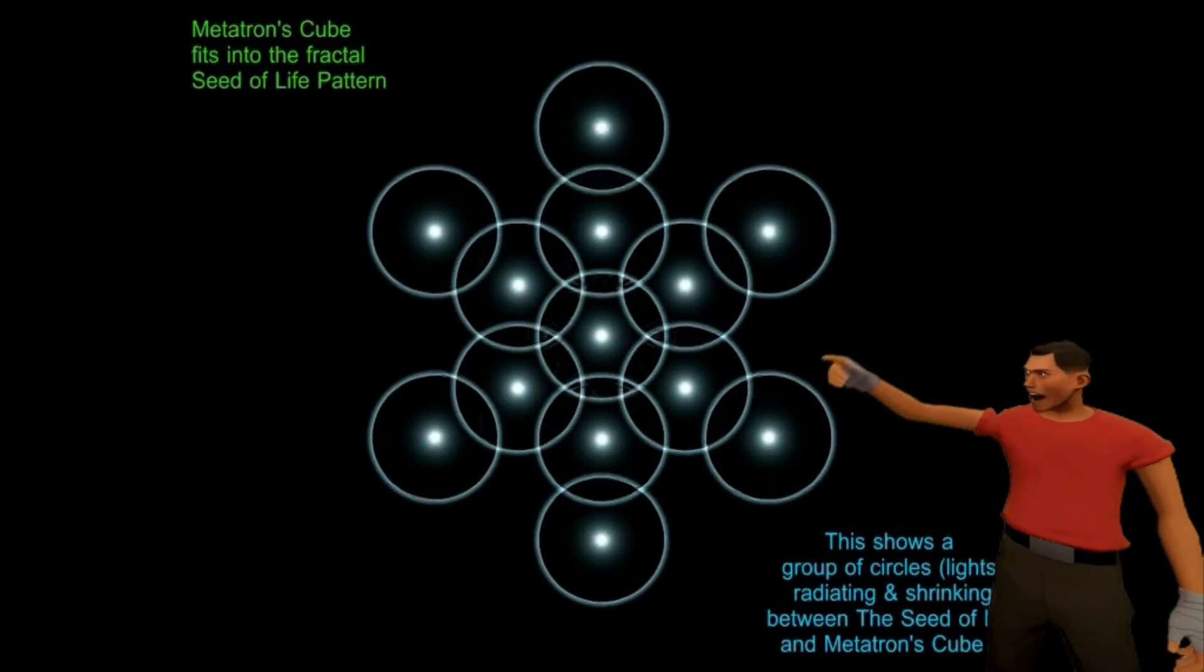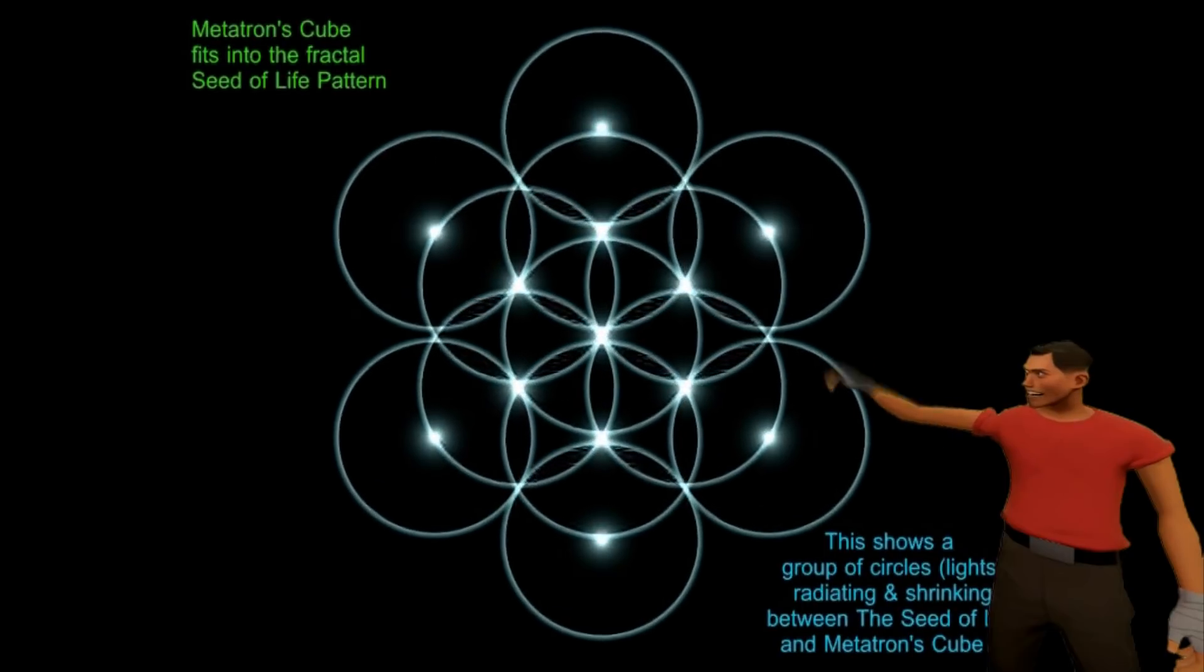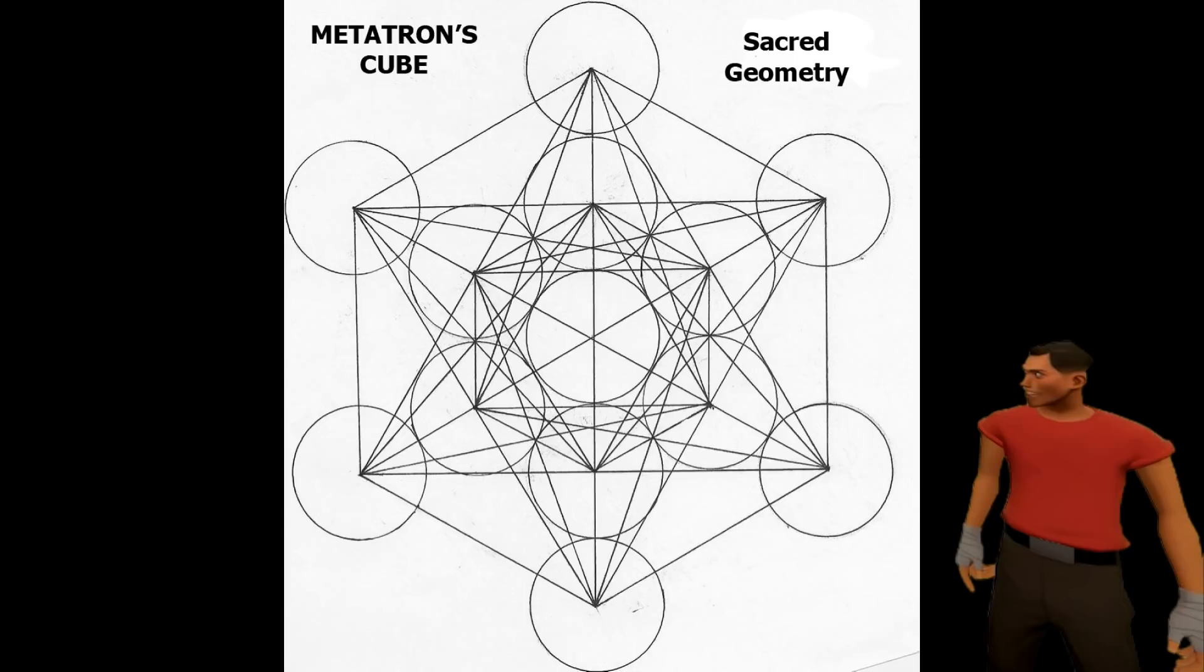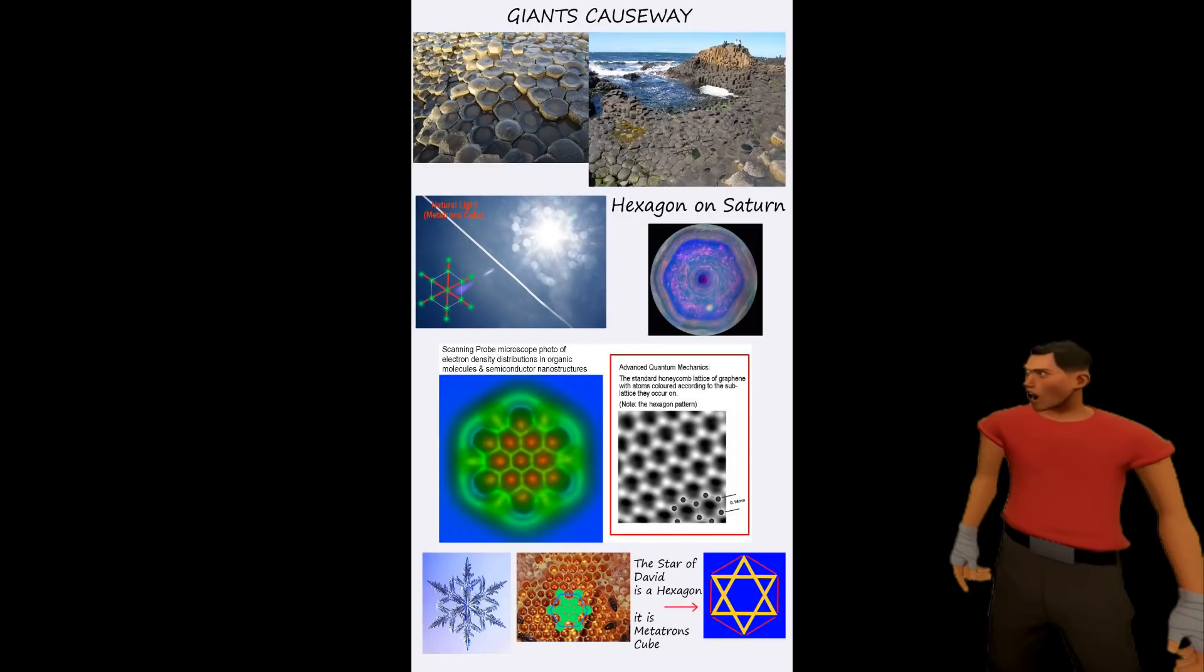If you take 13 circles and arrange them in this pattern, and then connect them all at their nuclei, you get Metatron's cube. This is a very famous symbol and can be found throughout all of human history.